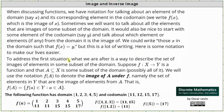To address the first situation, what we are after is a way to describe the set of images of elements in some subset of the domain. Suppose f maps X to Y, meaning X is the domain and Y is the codomain, where A is a subset of X, meaning A is a subset of the domain, possibly all of it.